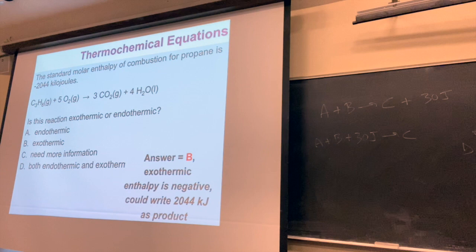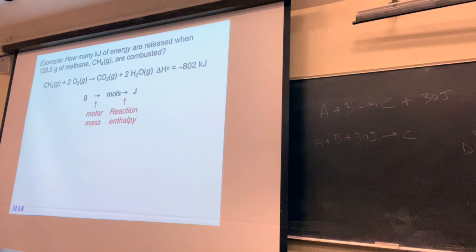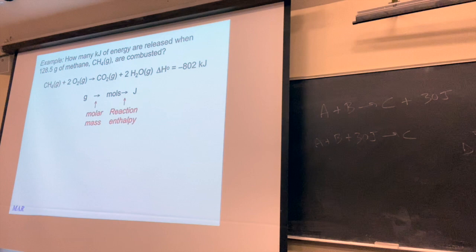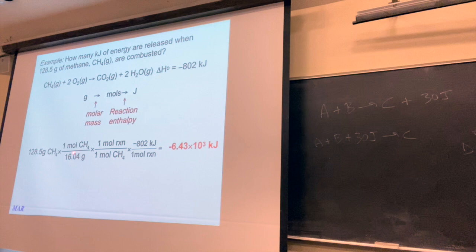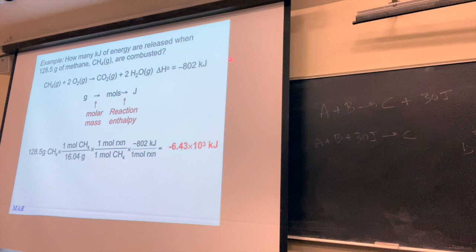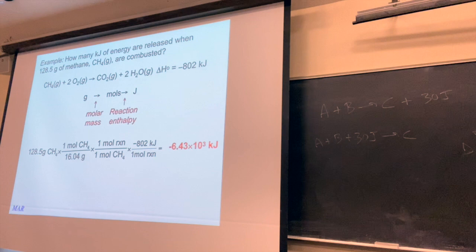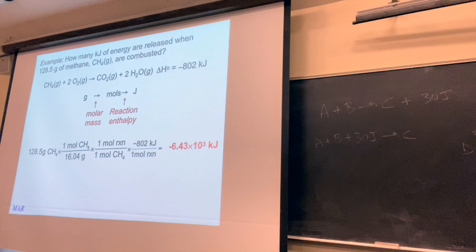You can use these relationships in all kinds of ways — for example, converting grams of a reactant or product into energy. In this problem, 128.5 grams of CH4 with a molar mass of about 16 grams per mole. One mole of methane is consumed and this is the energy that comes out. If you burn 128.5 grams of methane, you end up with quite a large amount of energy.